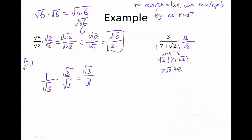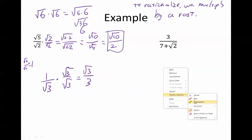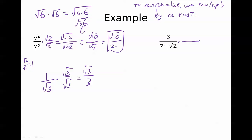We need to get rid of the root, and so what we're going to do to do that is multiply by this same thing, but we're going to change that to a negative. So let me show you. This, instead of multiplying by 7 plus root 2, we're going to multiply by 7 minus root 2.